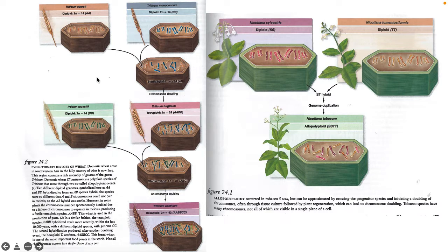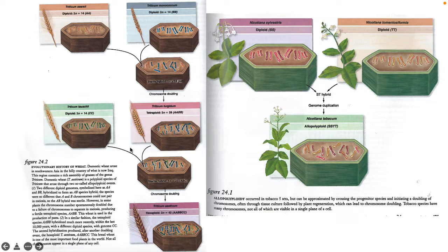Another example of allopolyploidy is wheat. We have Triticum caesareum and Monococcum — call them AA and BB. They form a sterile hybrid, and the chromosomes undergo doubling, giving us AABB. A third species is introduced, also forming a sterile hybrid that doubles, and now we have the wheat used in bread — one of the most important food plants in the world.